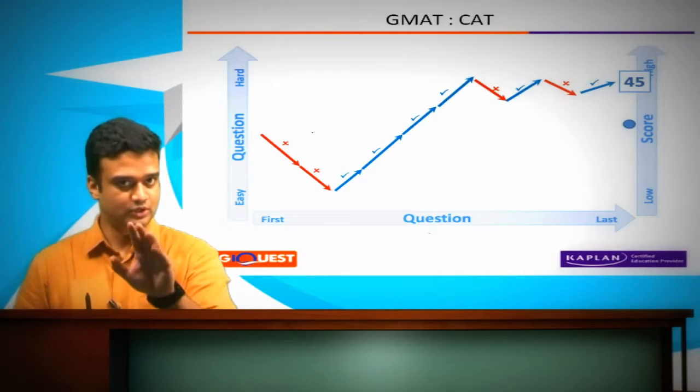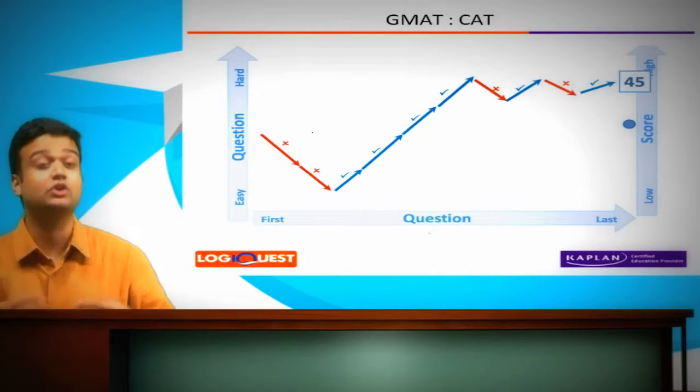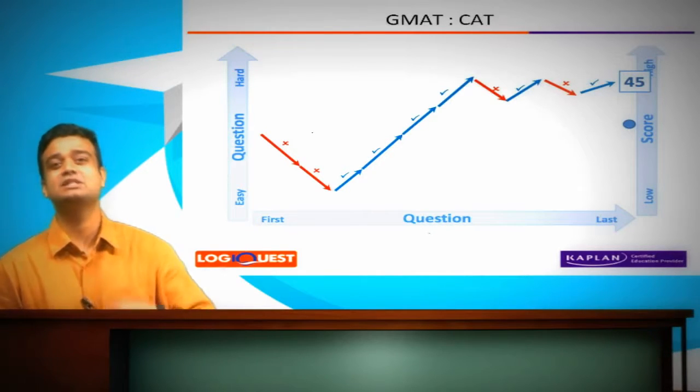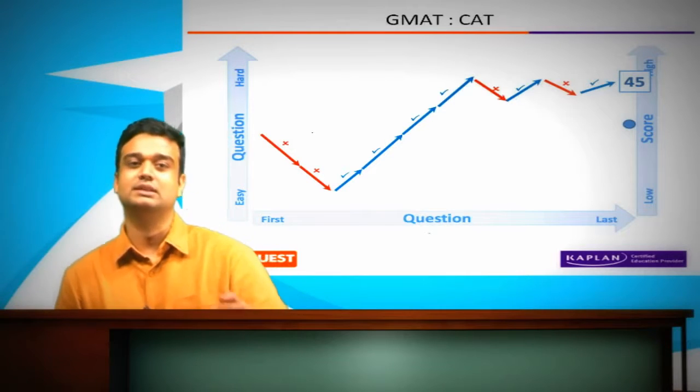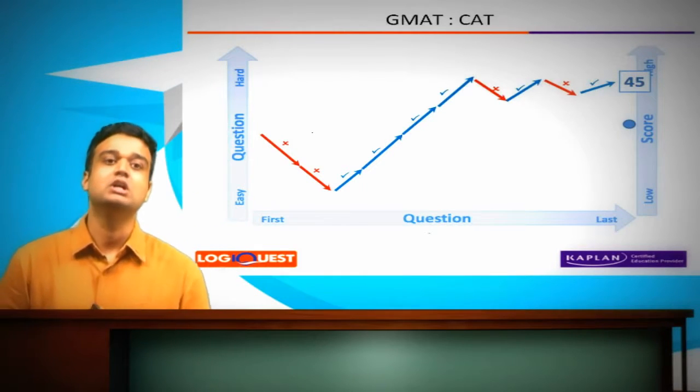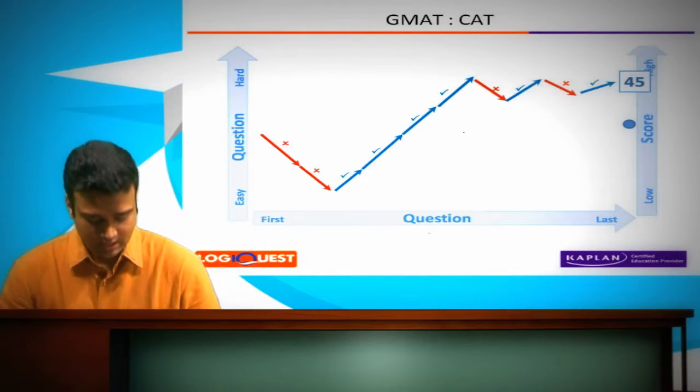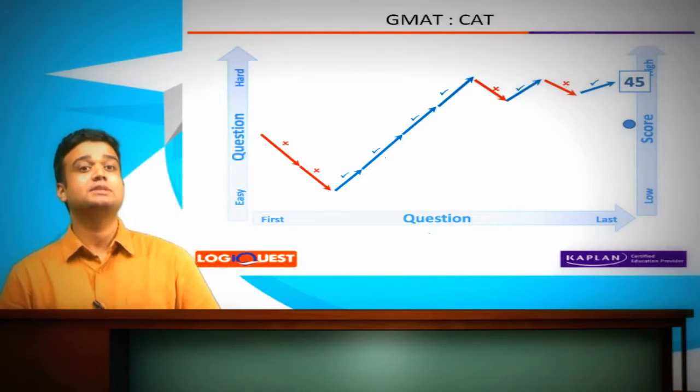Now, when you see the first question and you get it wrong, the system realizes that maybe this guy is not of the ability level to be able to answer this 500 level question. So the next thing that you see is that it drops down the difficulty level of that question.